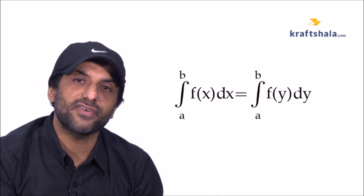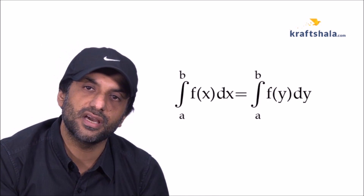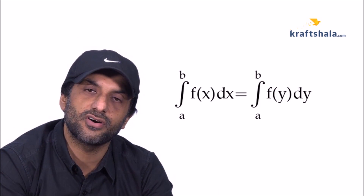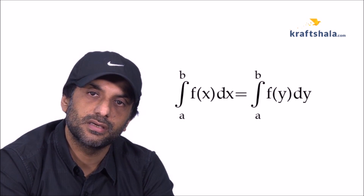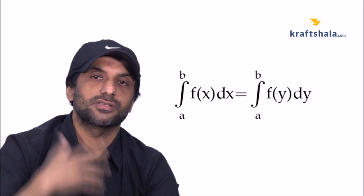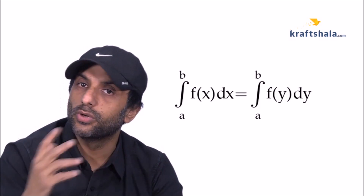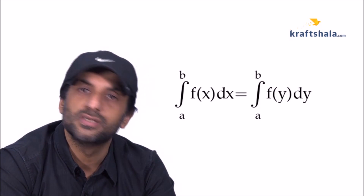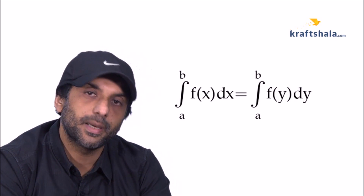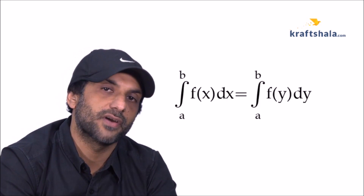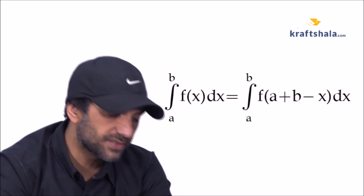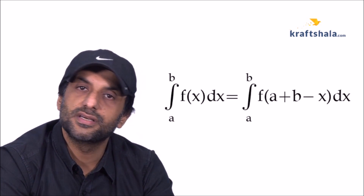The third property states that the integral from a to b of f(x) dx equals the integral from a to b of f(y) dy. The variable of integration is a dummy variable — it is irrespective of its name. For example, the integral from 0 to π/2 of sin(x) dx equals the integral from 0 to π/2 of sin(y) dy. You can change the variable simply by applying this property, but remember to also change the variable of respect.